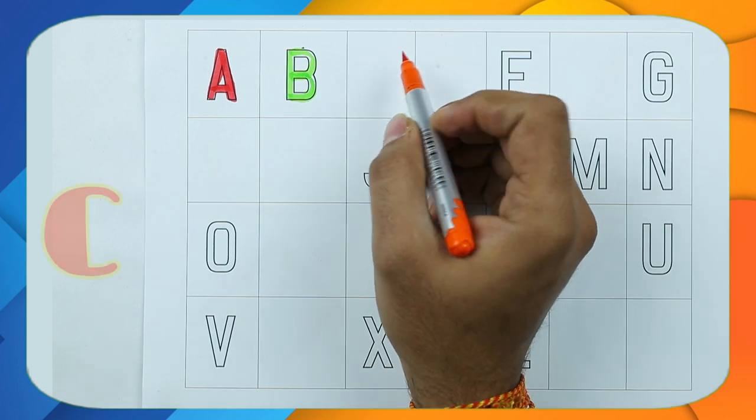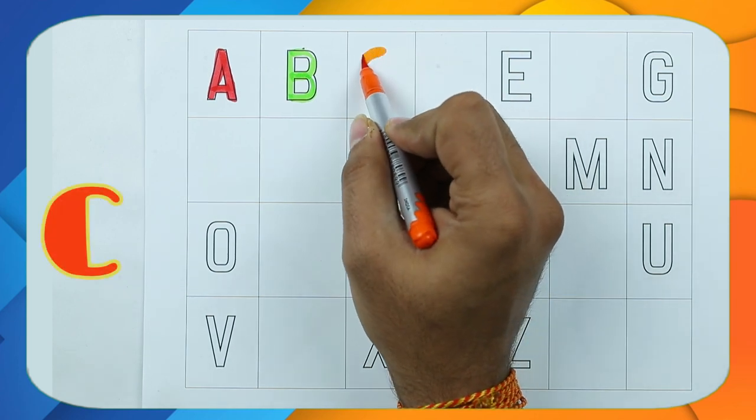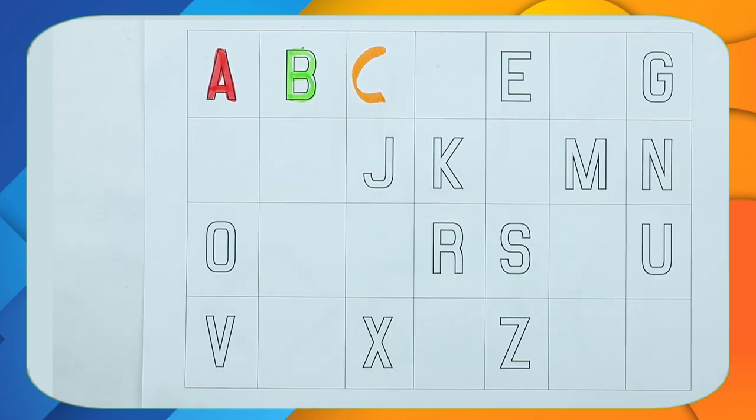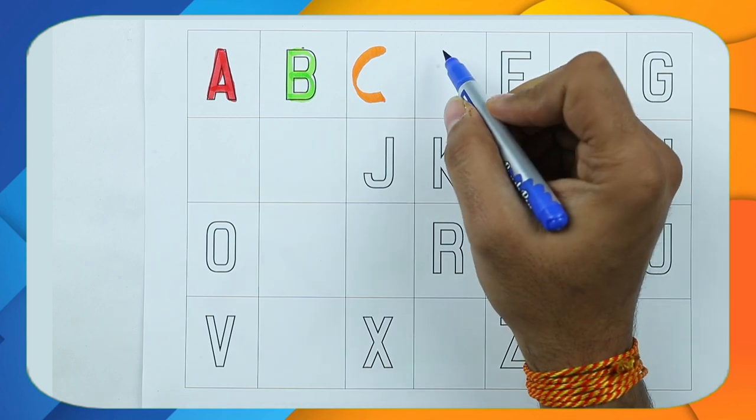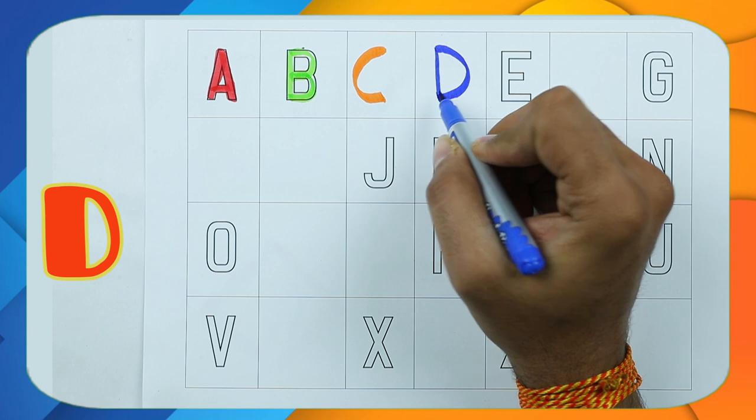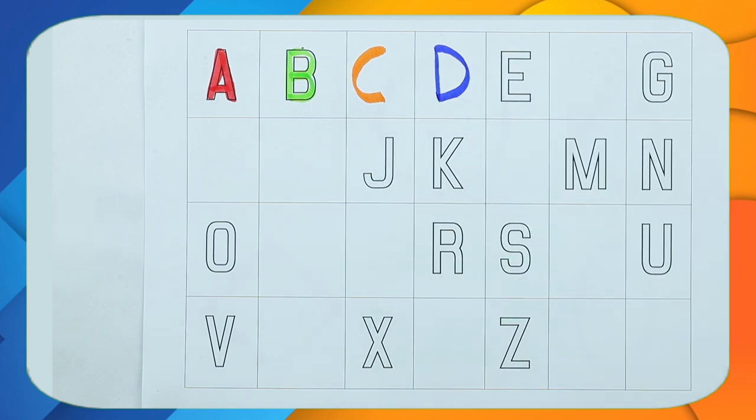C. What's next? C with orange color. C for cat. What's next? Tell me. Yes, right! D for dog with blue color.